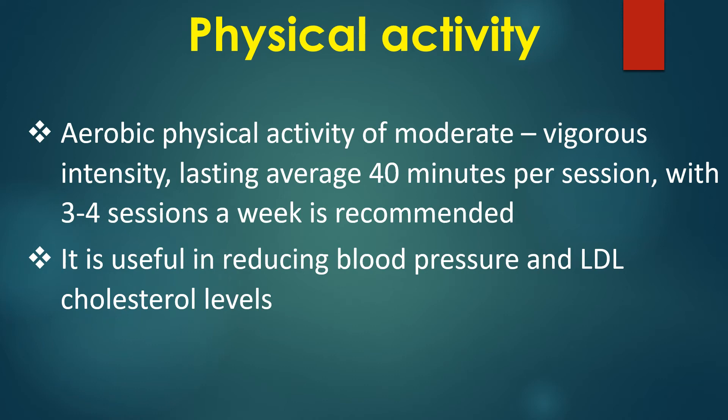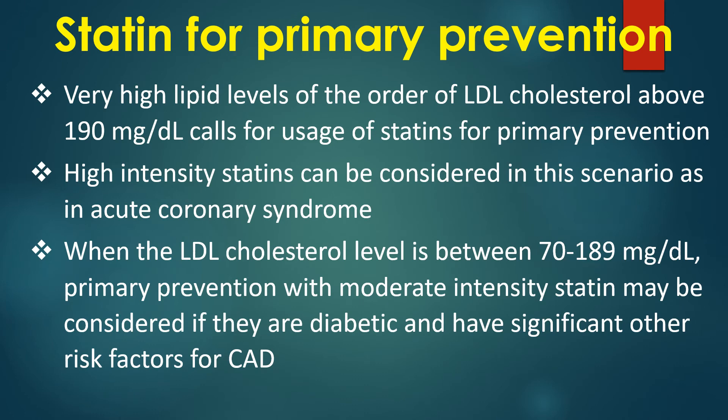Very high lipid levels of the order of LDL cholesterol above 190 mg per deciliter calls for usage of statins for primary prevention. High intensity statins can be considered in this scenario as in acute coronary syndrome. When the LDL cholesterol level is between 70 and 189 mg per deciliter, primary prevention with moderate intensity statins may be considered if they are diabetic and have significant other risk factors for CAD.